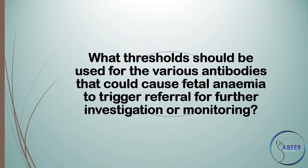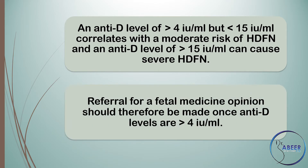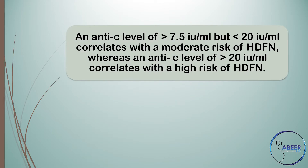What thresholds should be used for the various antibodies that could cause fetal anemia to trigger a referral for further investigation or monitoring? An anti-D level of greater than 4 international units per milliliter but less than 15 IU/mL correlates with a moderate risk of HDFN, and a level greater than 15 IU/mL can cause severe HDFN. Referral for a fetal medicine opinion should therefore be made once anti-D levels are greater than 4 IU/mL.